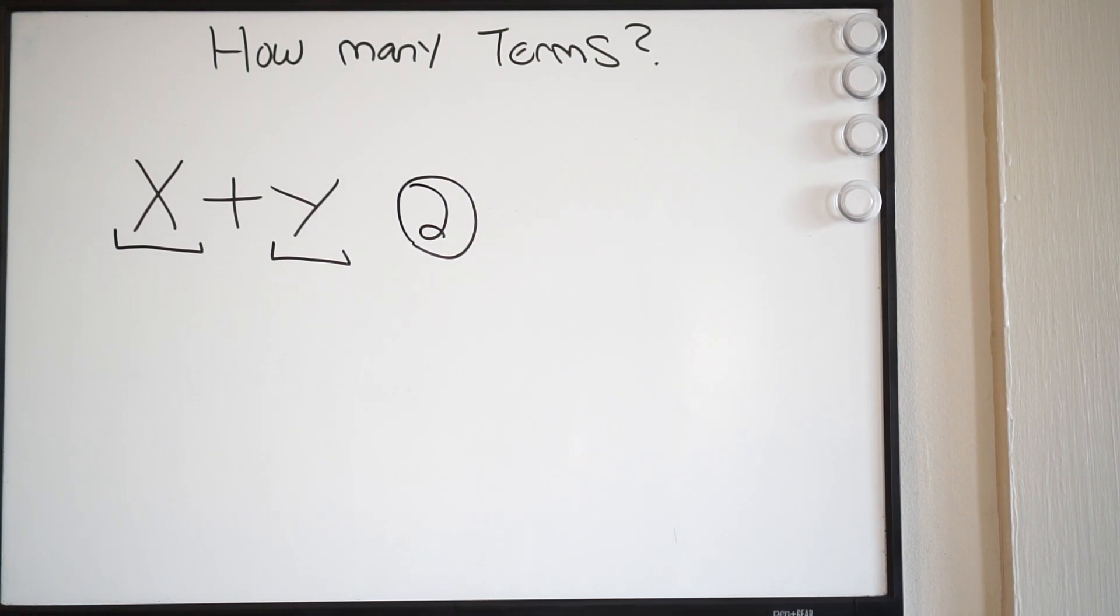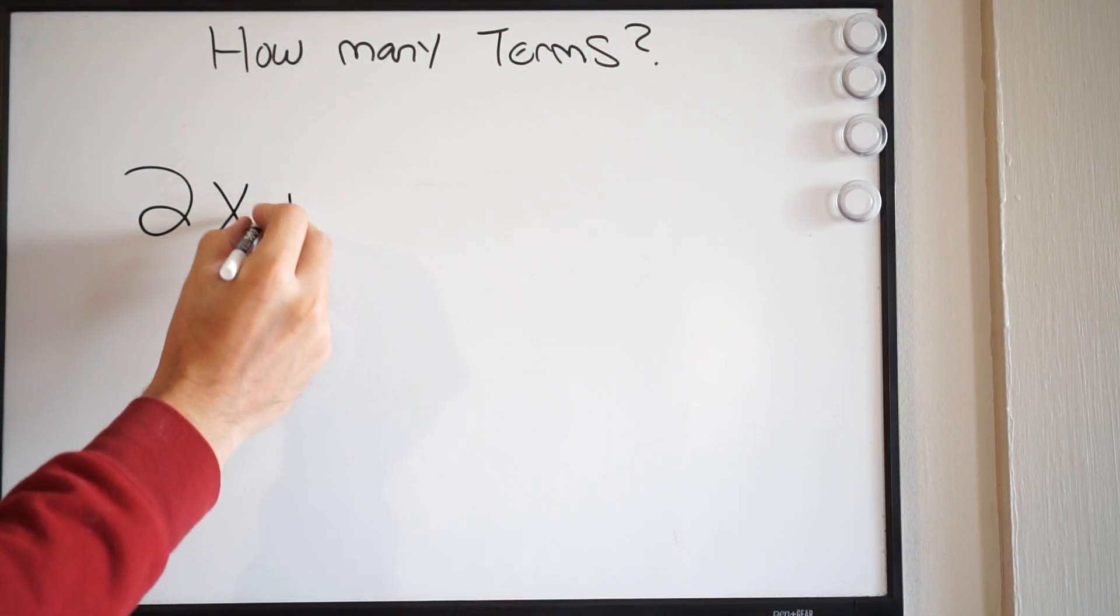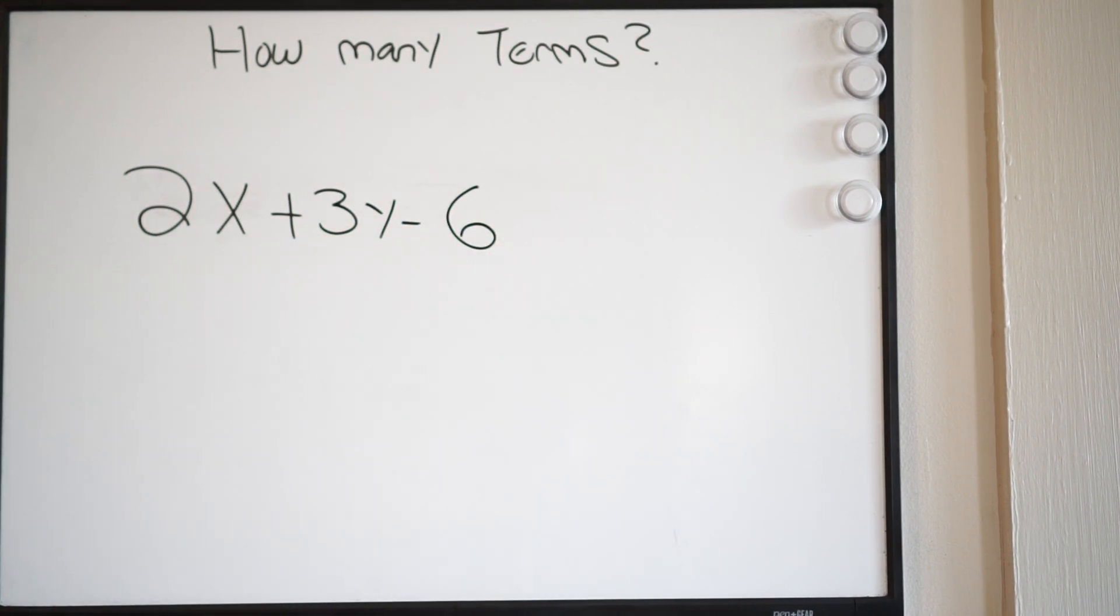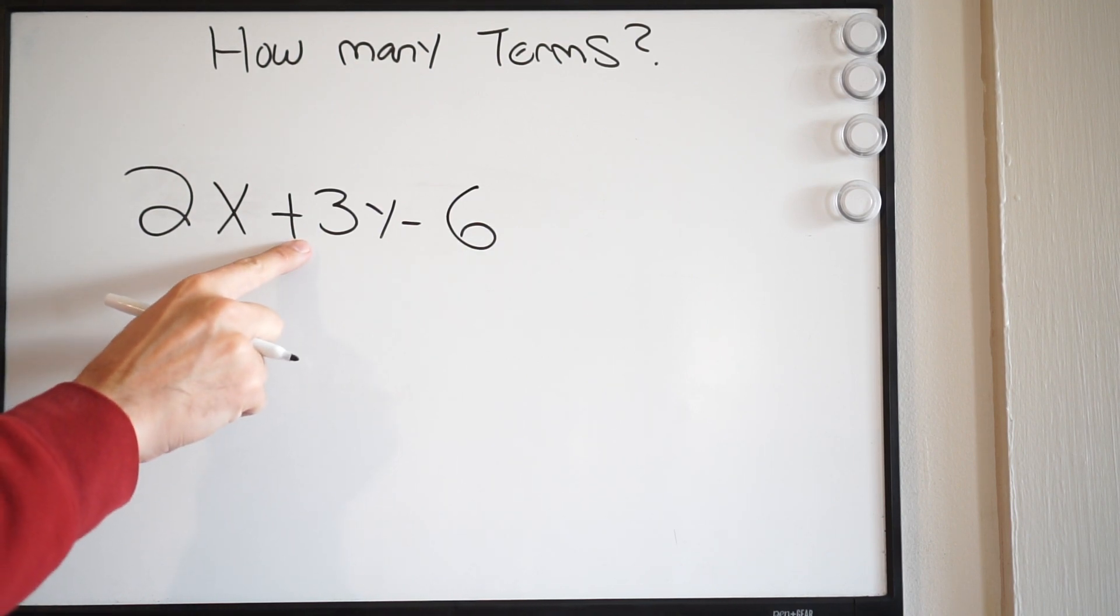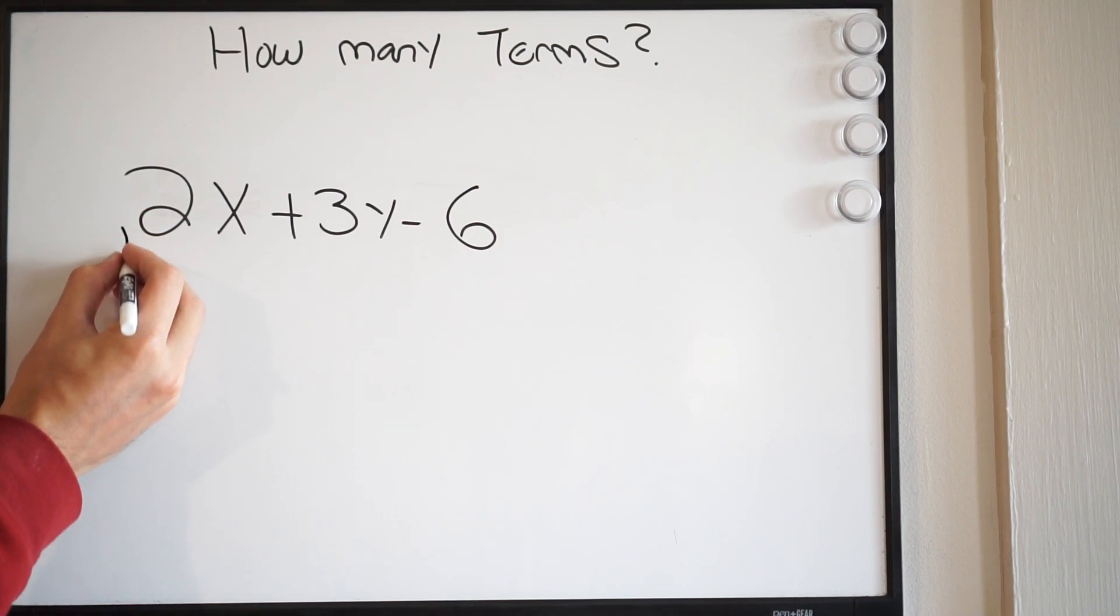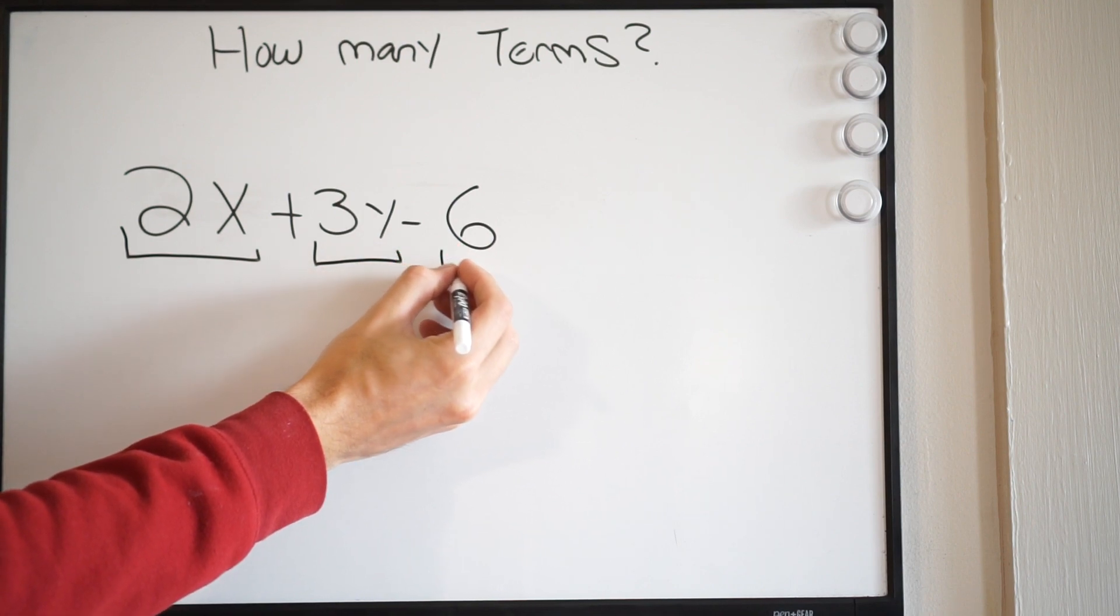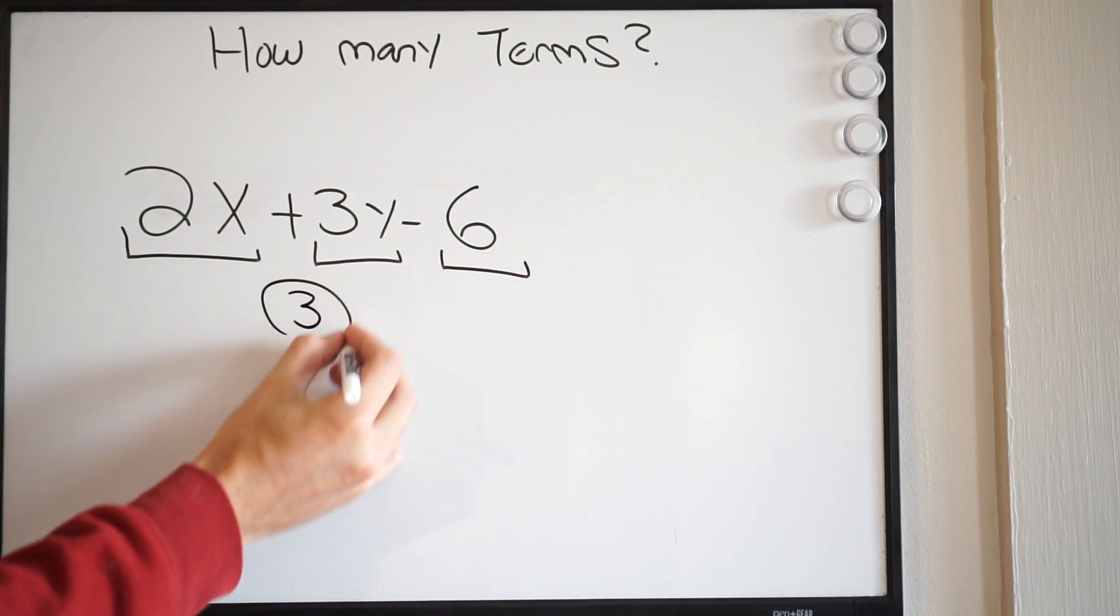Okay, let's try another example. So what if I have 2x plus 3y minus 6? So again, how many terms do I have? Okay, well again, look for addition and subtraction, which I have here and here. So again, those are your separators. So this right here is all one term, this is a term, and this is a term. So I have three terms here.